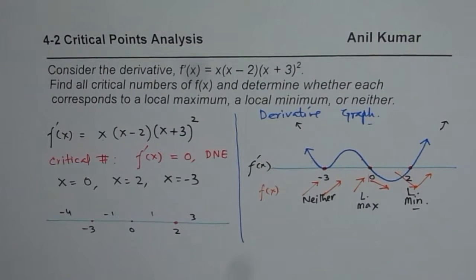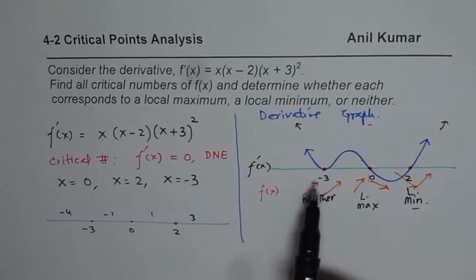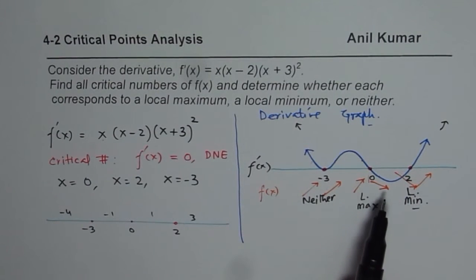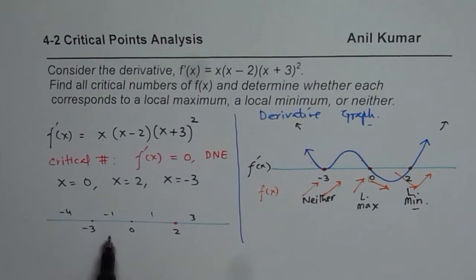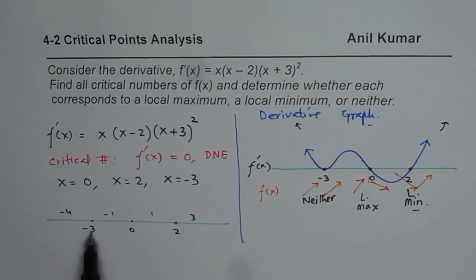So, straight from the graph of our derivative, we can find the result. I hope that is absolutely clear to you. It is very easy and good to understand. Now, as an exercise, what you can do is, you can find algebraically how the nature of derivative is near to these critical numbers and where should we have local maximum, local minimum or neither. That should be interesting. Thank you and all the best.